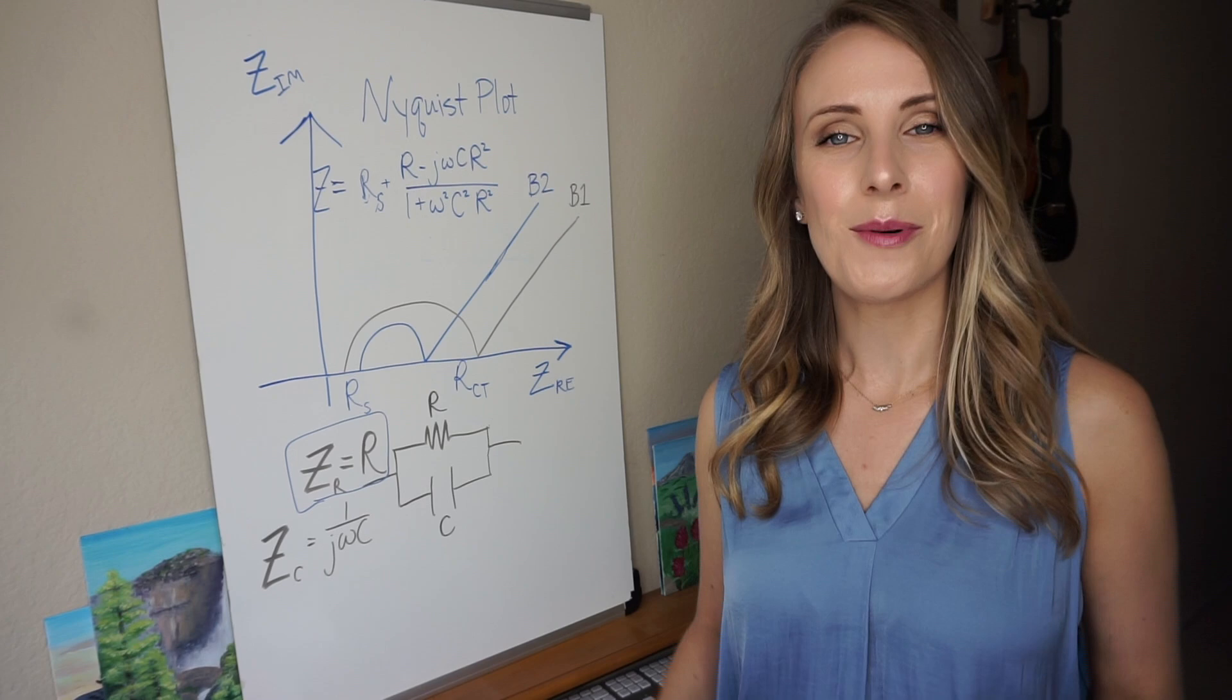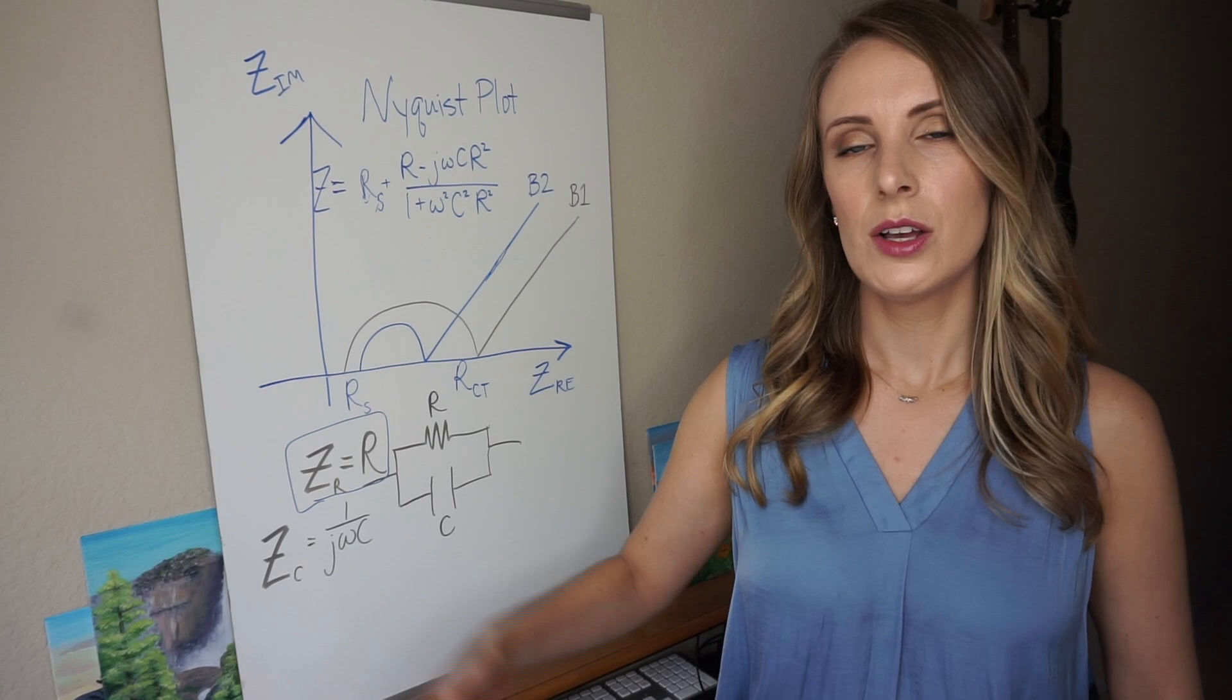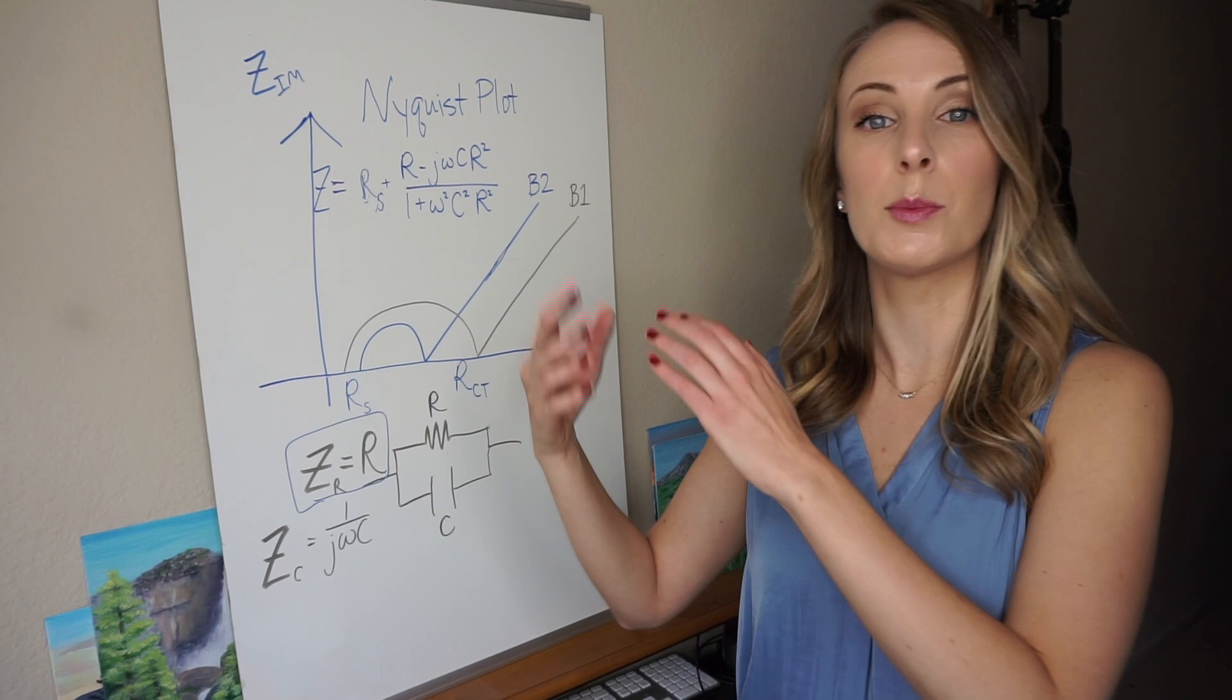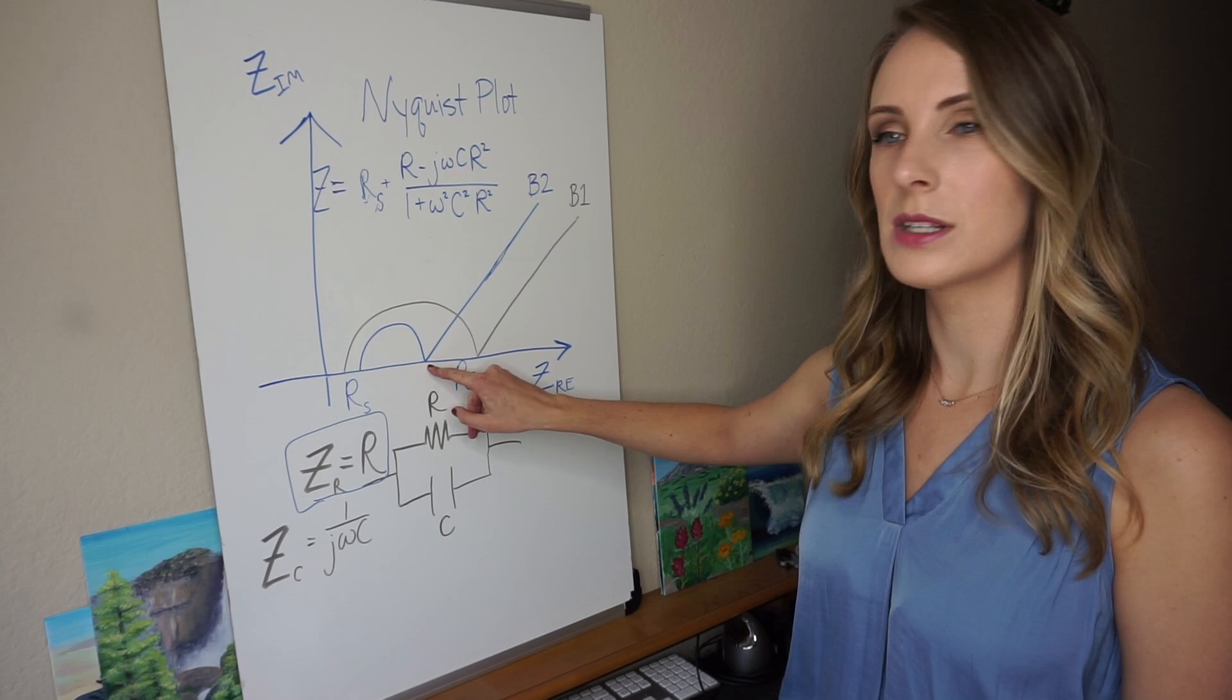Besides this, you want to do a lot of different other techniques to investigate why your batteries may be failing, why the capacity may be decreasing, and even using EIS intermittently. So if you do it after the first cycle, and then you cycle the battery 50 more times, and then you perform EIS again,